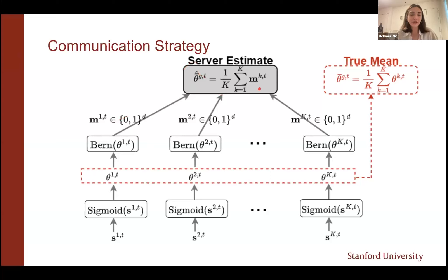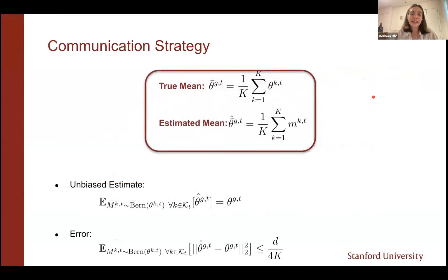The server's estimate is the aggregate of the binary masks, while ideally we want the aggregate of the probability masks. We can show this estimate is unbiased and we can upper bound its error — these are necessary properties to prove convergence results. We can claim the model will converge to the same point because we have an unbiased estimate with bounded error.